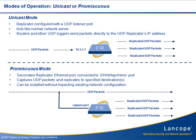The StealthWatch Flow Replicator has two different modes of operation. First, there's unicast mode. In this mode of operation, the Replicator is configured with an IP address and acts just like a normal network server. NetFlow, SFlow, Syslog, and other UDP-based applications send their packets directly to the Replicator's IP where they are replicated and transmitted to their final destinations.